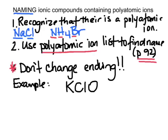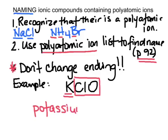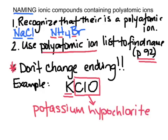Here is K-C-L-O. That's three atoms, so one has to be a polyatomic ion. If you look through your polyatomic ion list, you will see this group — the negatively charged ones. K, as we know from the periodic table, is potassium. When naming this, I would write potassium, and on my polyatomic ion list, CLO is listed as hypochlorite. We don't change the ending — we leave it as it says within the polyatomic ion list.